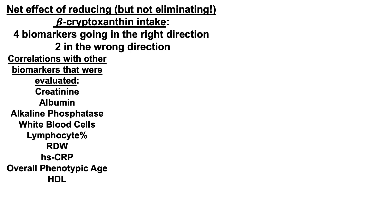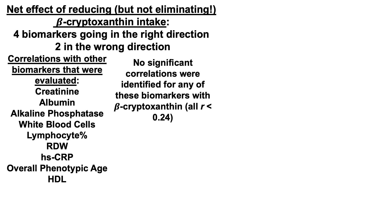Note that I didn't just look at those six biomarkers. I also evaluated correlations for beta-cryptoxanthin with all other variables on Levine's biological age calculator — phenotypic age — including creatinine, albumin, alkaline phosphatase, white blood cells, lymphocyte percentage, red blood cell distribution width RDW, high-sensitivity C-reactive protein, overall phenotypic age, and HDL. No significant correlations were identified for any of these biomarkers, as they all had very weak correlation coefficients less than 0.24.